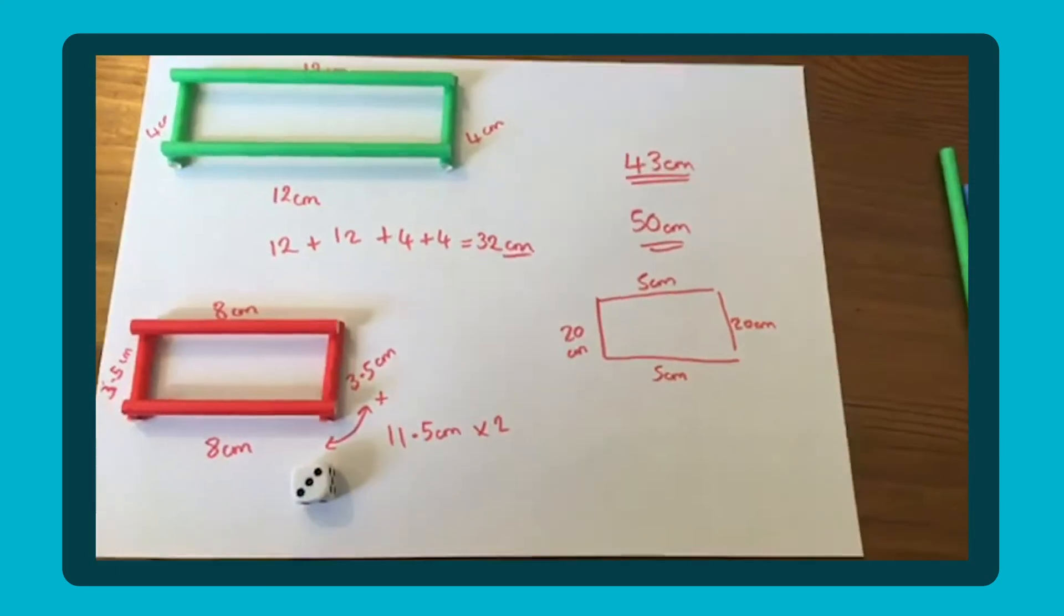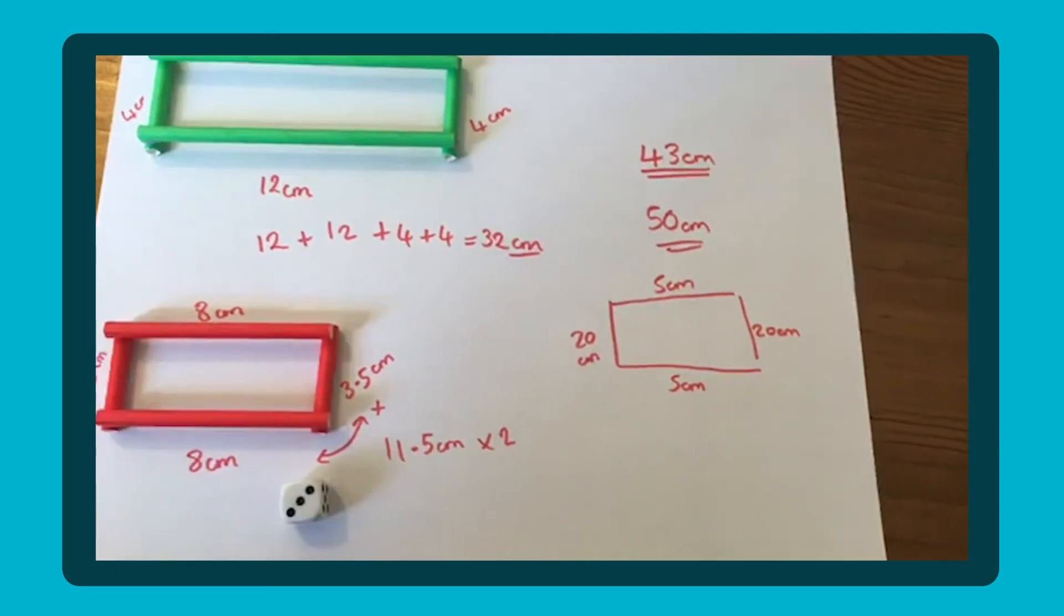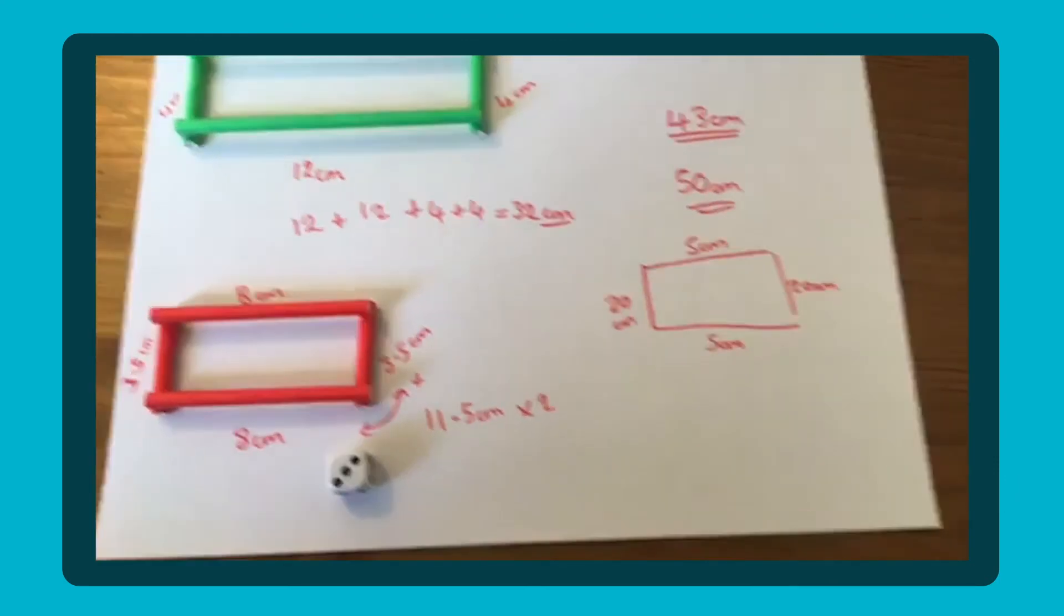So there's two different things you could do there to help you find the perimeter of a rectangle. Let me turn this around. So just a nice couple of ideas that you could use to find the perimeter of a rectangle. Those activities will be available on the Classroom Secrets timetable over on classroomsecrets.co.uk.